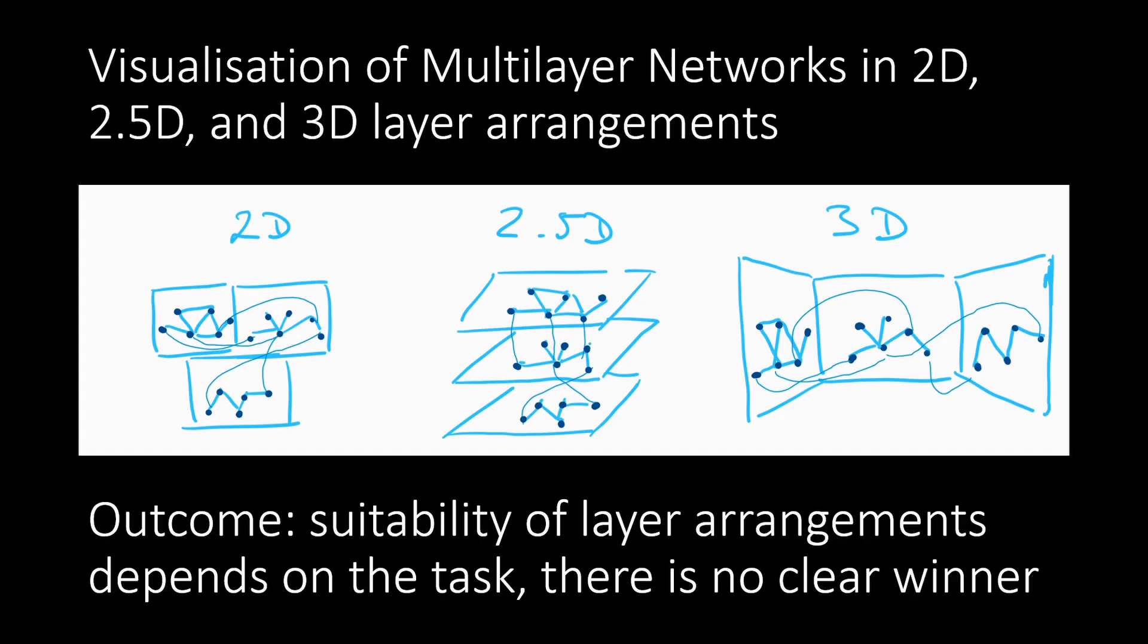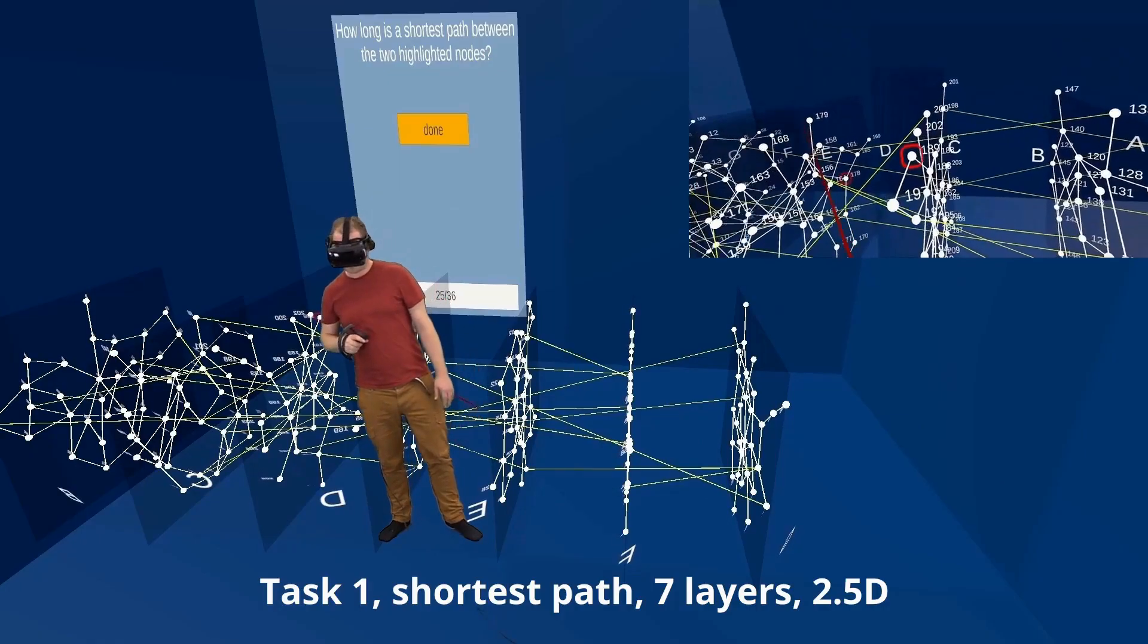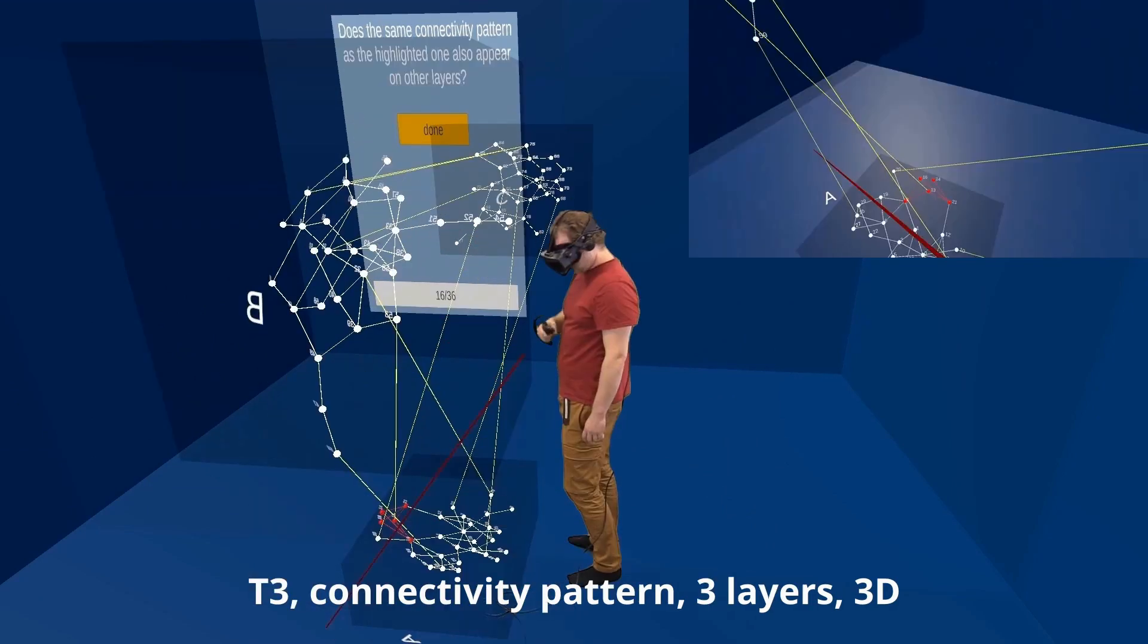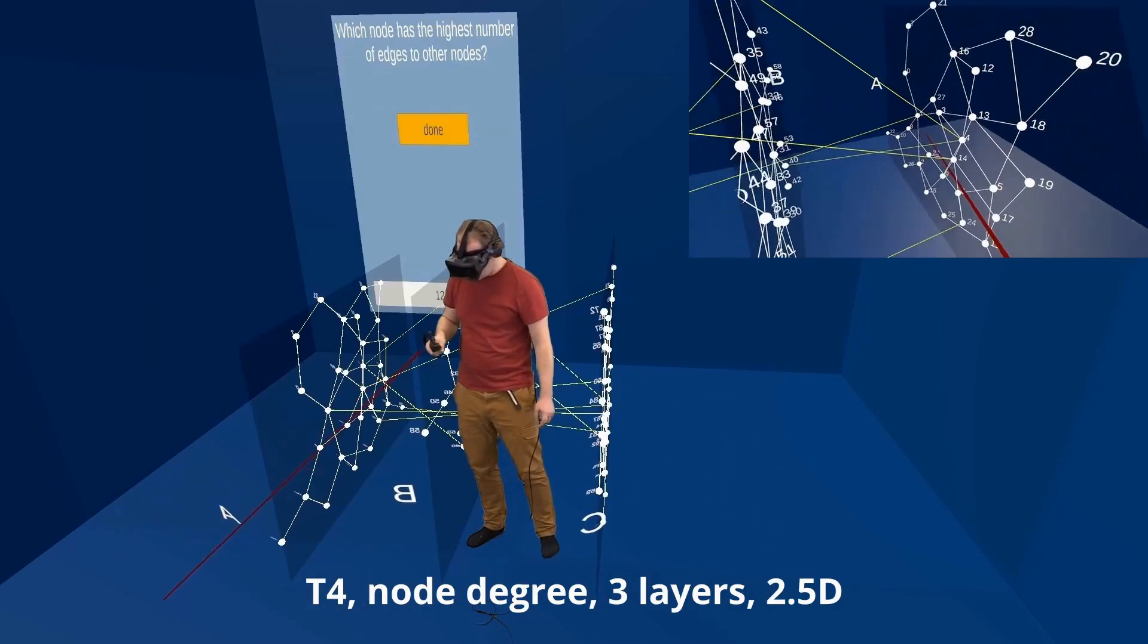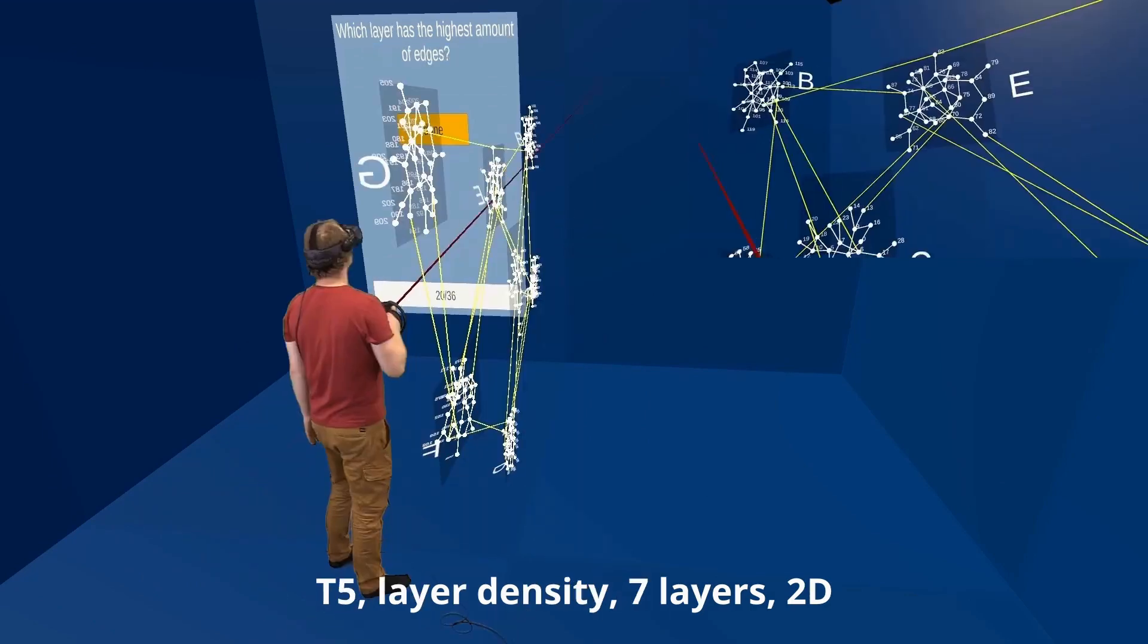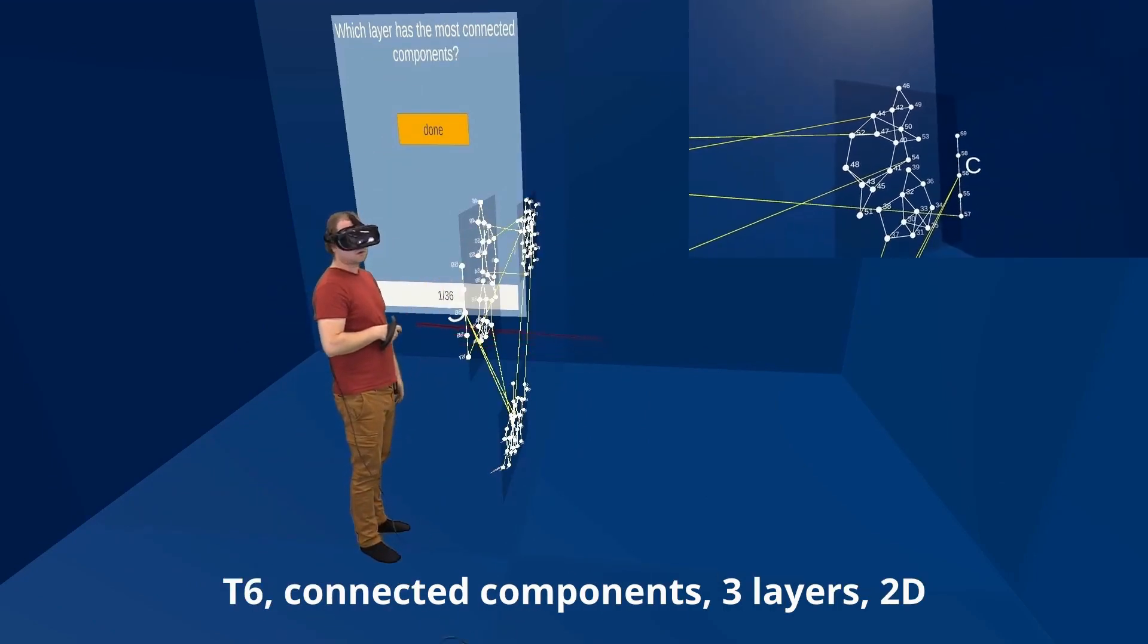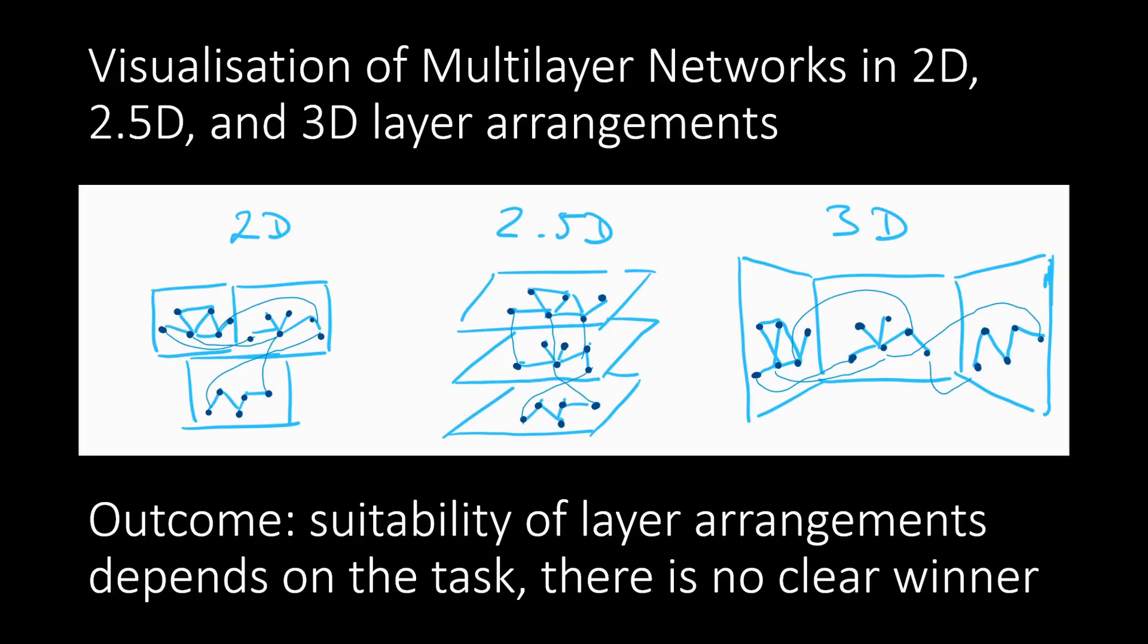We investigated the impact of layer arrangements of multi-layer networks on task performance. We compared 2D, 2.5D, and 3D layer arrangement for networks with three and seven layers. In a human subject study, the participants solved six common tasks on multi-layer networks. Our results show that there is no clear overall winner and the choice of the layer arrangement depends on the task.